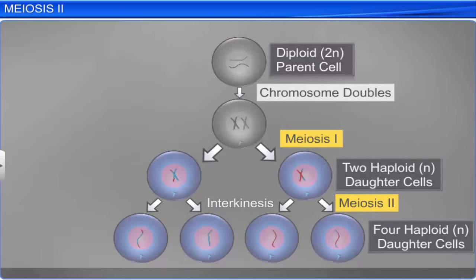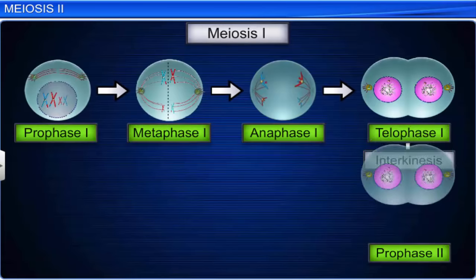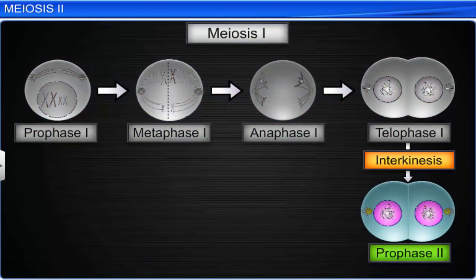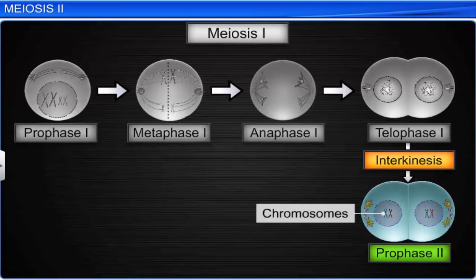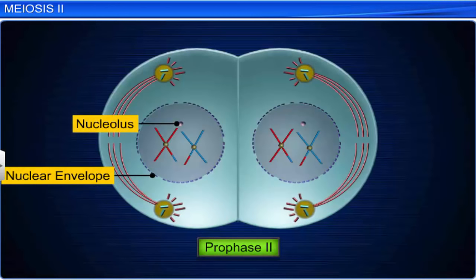Interkinesis is followed by prophase 2, a stage that is much simpler than prophase 1. During this phase, the chromosomes get thicker, shorter, and distinct, with each chromosome consisting of two chromatids. By the end of this phase, the nucleolus disappears and the nuclear envelope disintegrates.